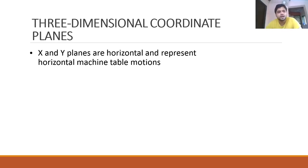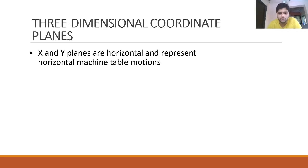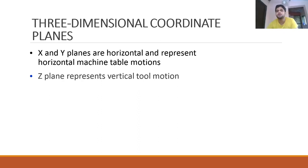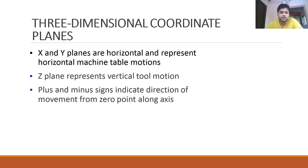The X and Y planes are horizontal, representing the work table on drilling or milling machines. The Z axis represents vertical tool motions — the tool moves down and up in the Z direction. Rotation about the Z axis is the spindle rotation, which can be clockwise or counterclockwise, with special codes for each. Plus and minus signs indicate the direction of movement from the zero point along each axis.